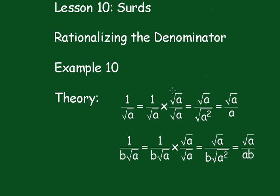To do this, we multiply the numerator and denominator by whatever this is. In this case, the square root of a over the square root of a. Now the square root of a over the square root of a is 1, so we're not changing the value of this.